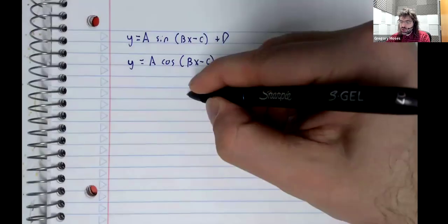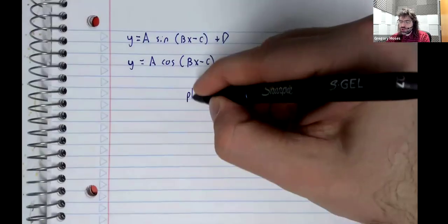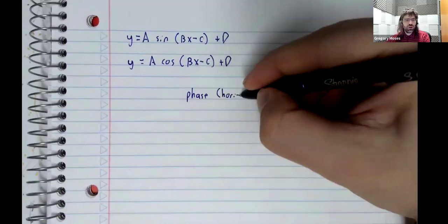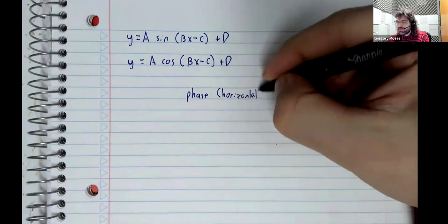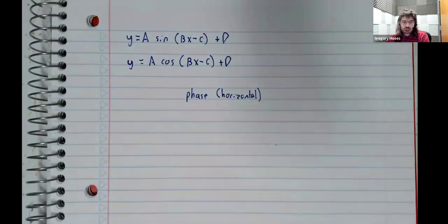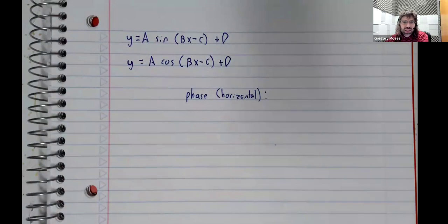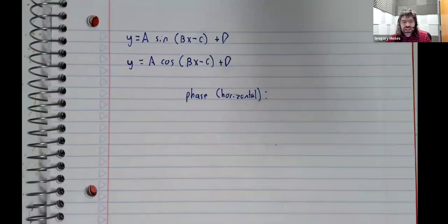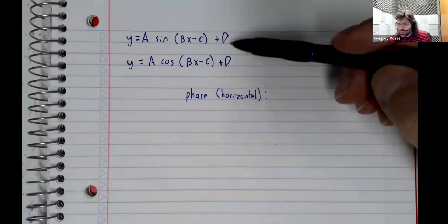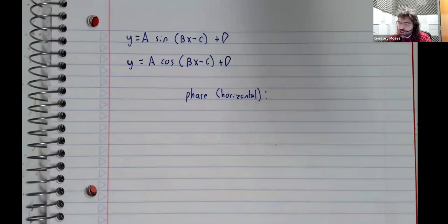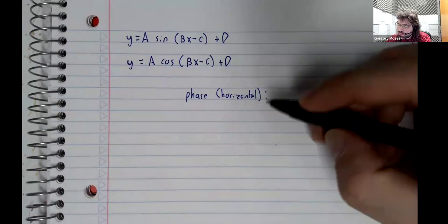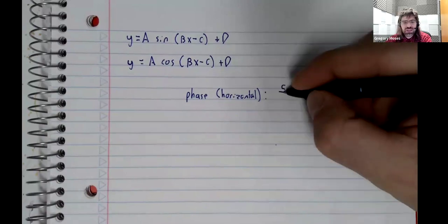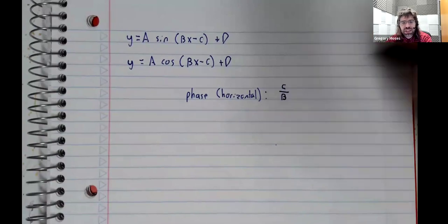The horizontal shift, also called the phase shift, is unfortunately not given by C. That would be nice. D gives you the vertical shift, but the horizontal shift is trickier—it's C divided by B.